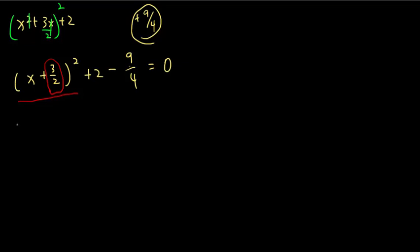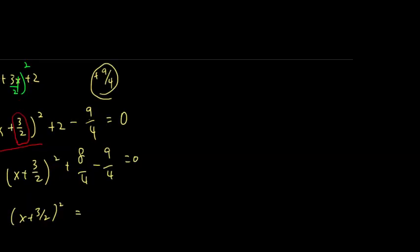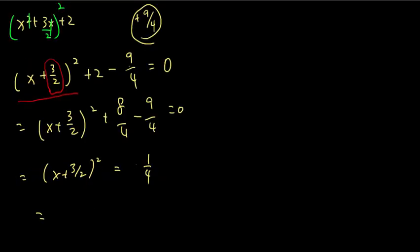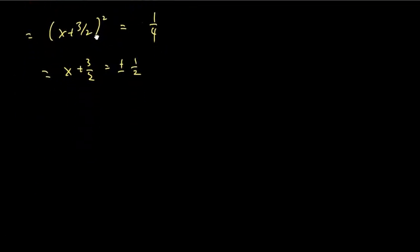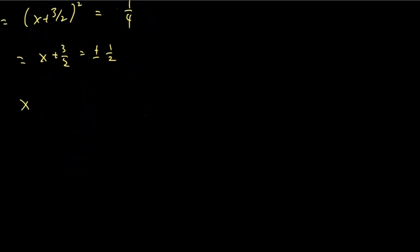That means that x plus 3 over 2 squared equals 1 over 4. So that would be x plus 3 over 2 equals plus or minus 1 over 2. So that would be x1 equals negative 2 or x2 equals negative 1.